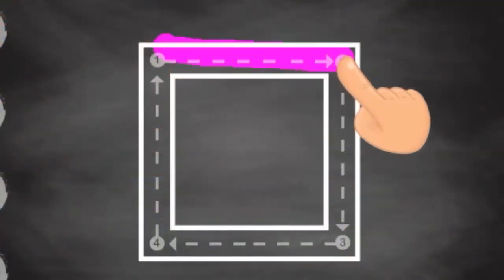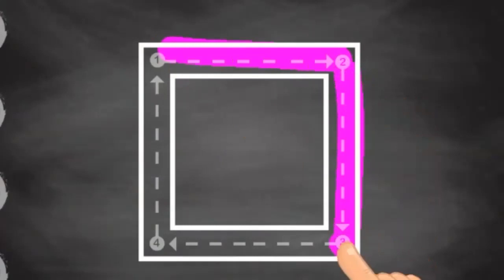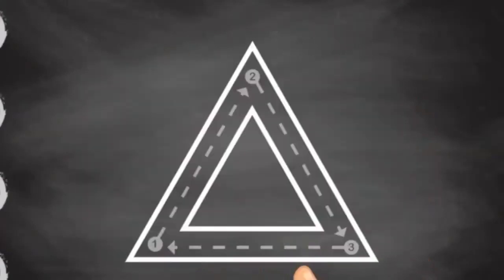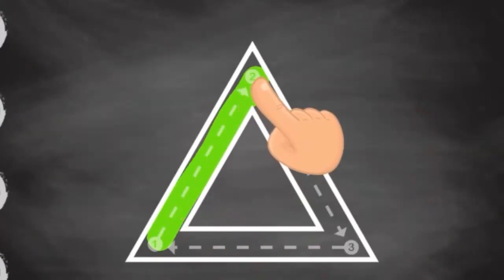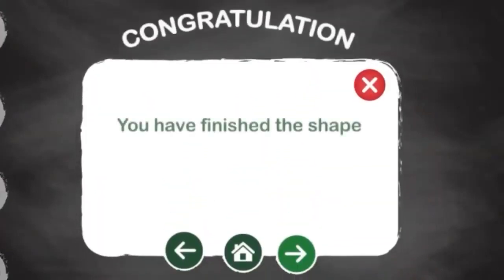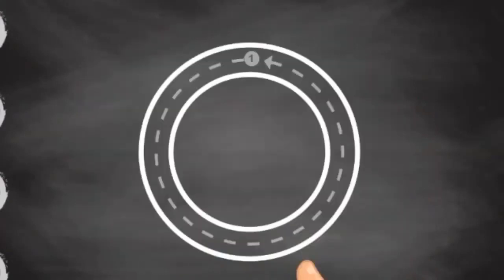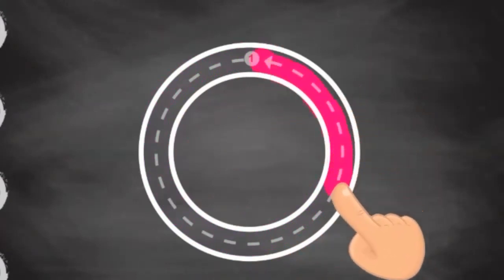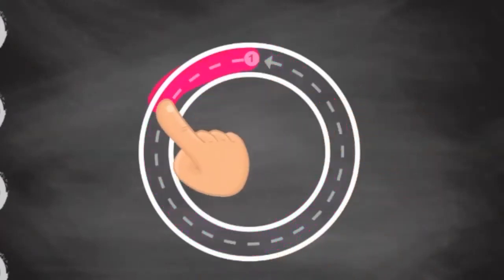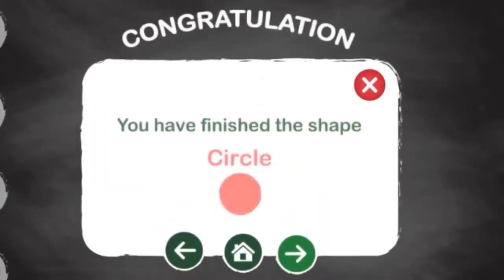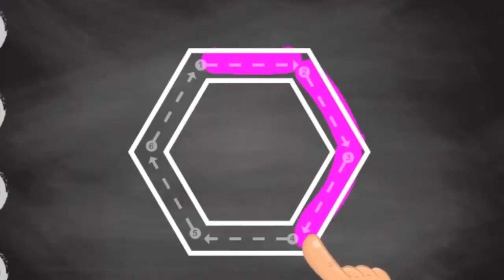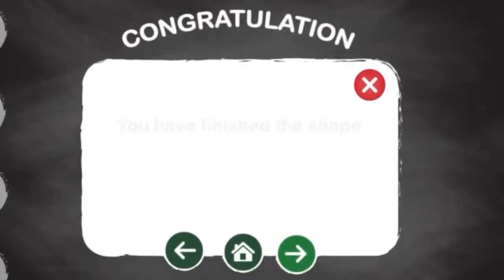Square — one, two, three, four sides — that's a square. One, two, three sides — and that's a triangle. That's a circle with one stroke — yes, that is a circle. That has too many sides — six sides — that's a hexagon.